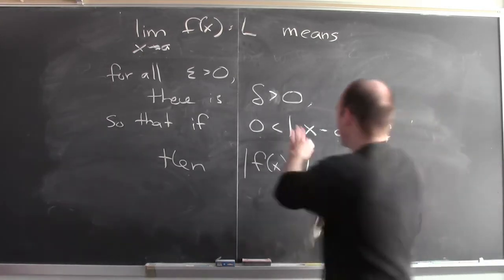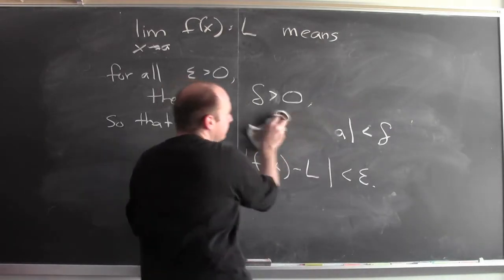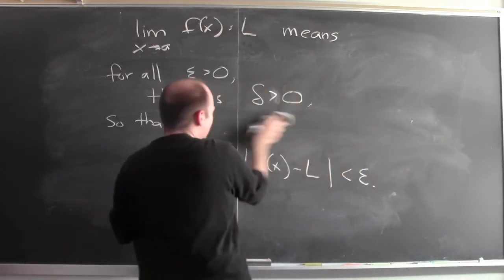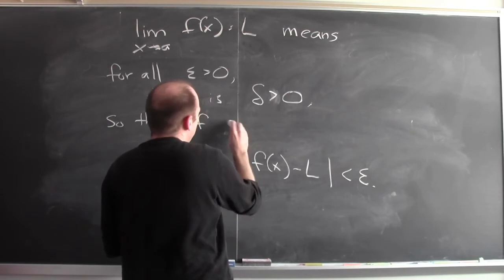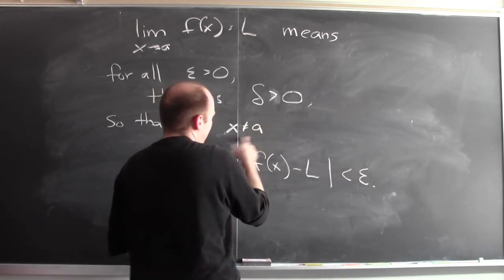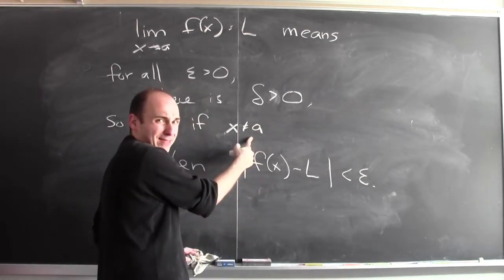So I can rewrite that in a little bit easier way. Instead of saying that, it's the same thing to say if x is not equal to a, so the absolute value of x minus a isn't 0,